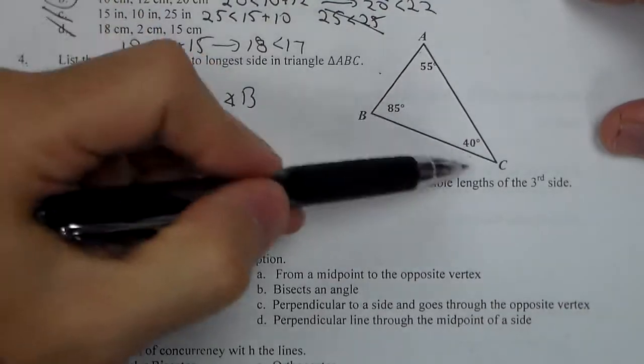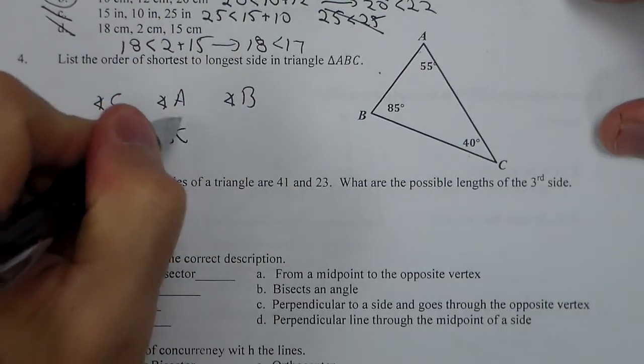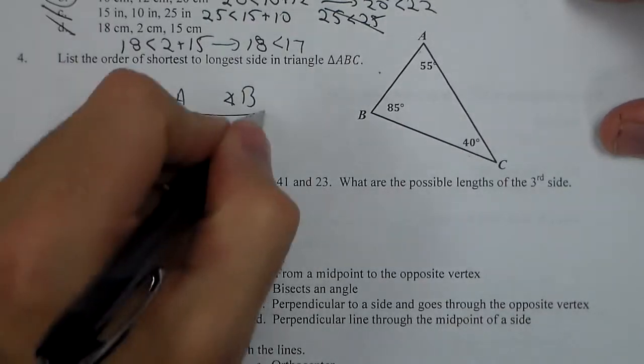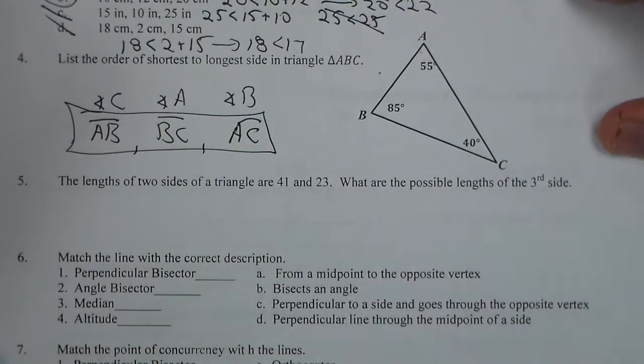A is opposite BC, the other two letters, which means B is opposite AC. So our order from shortest to longest is AB, BC, AC.